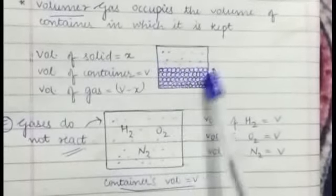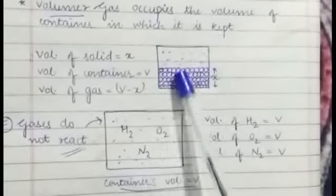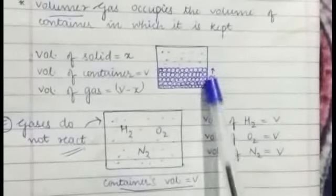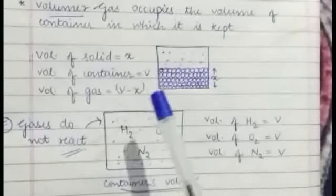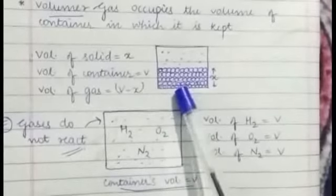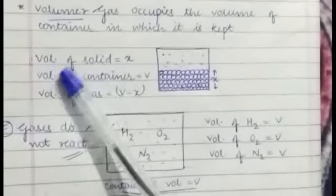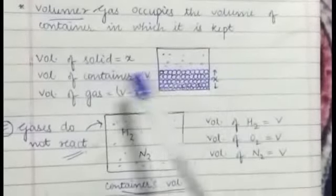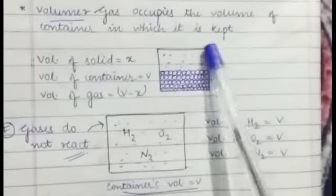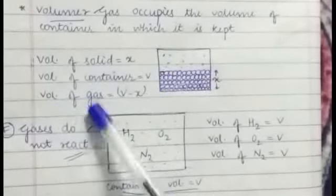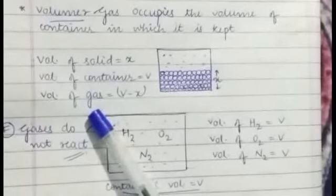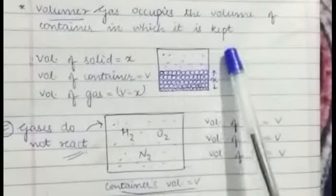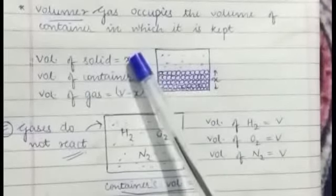If we have a container with solid in it, solid particles are fixed, so gas cannot enter into the solid. So we have volume of the solid as X, the volume of the whole container is V, and the volume of the gas is V minus X.